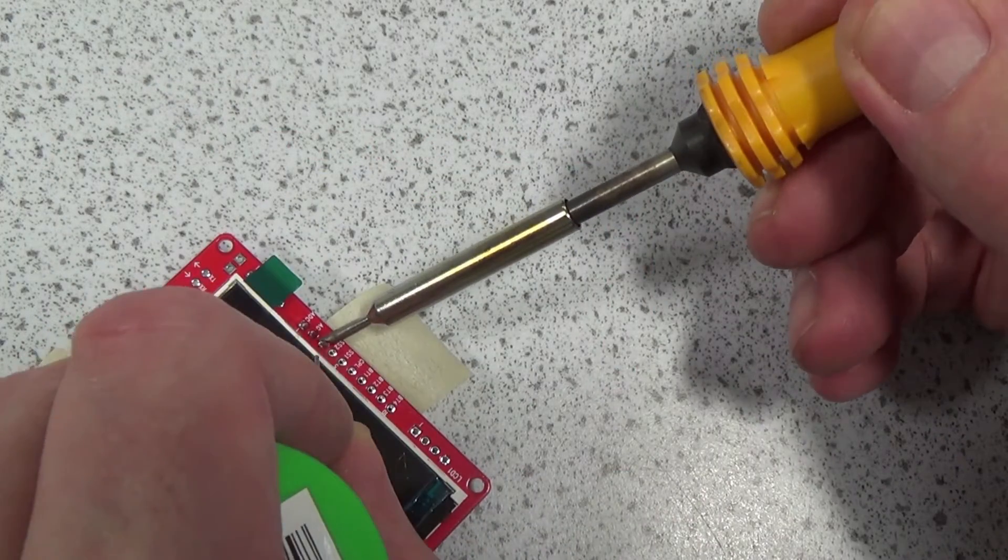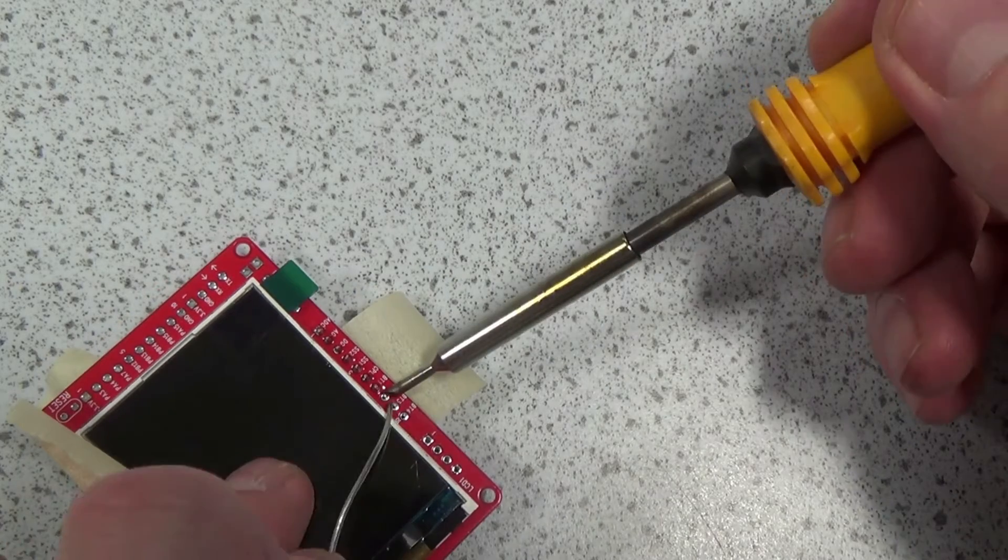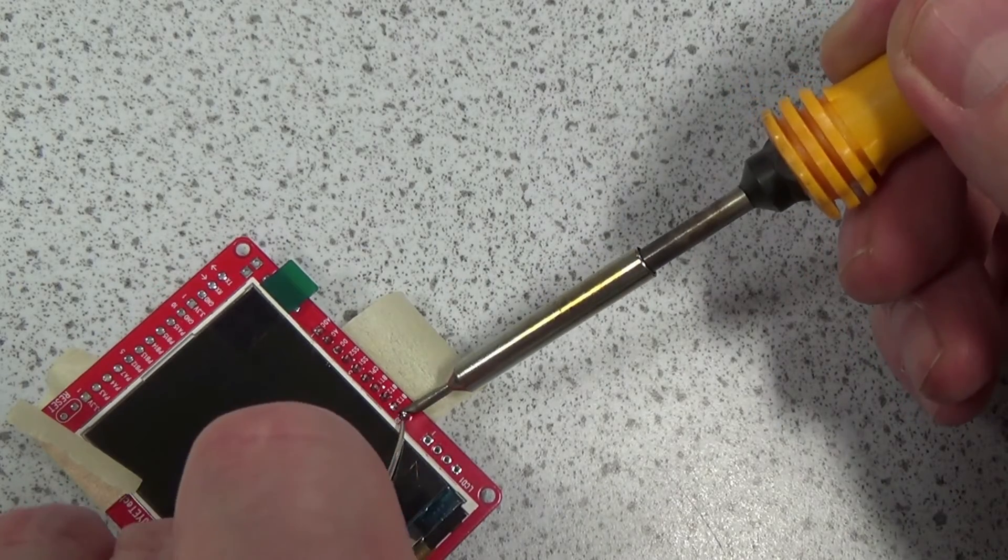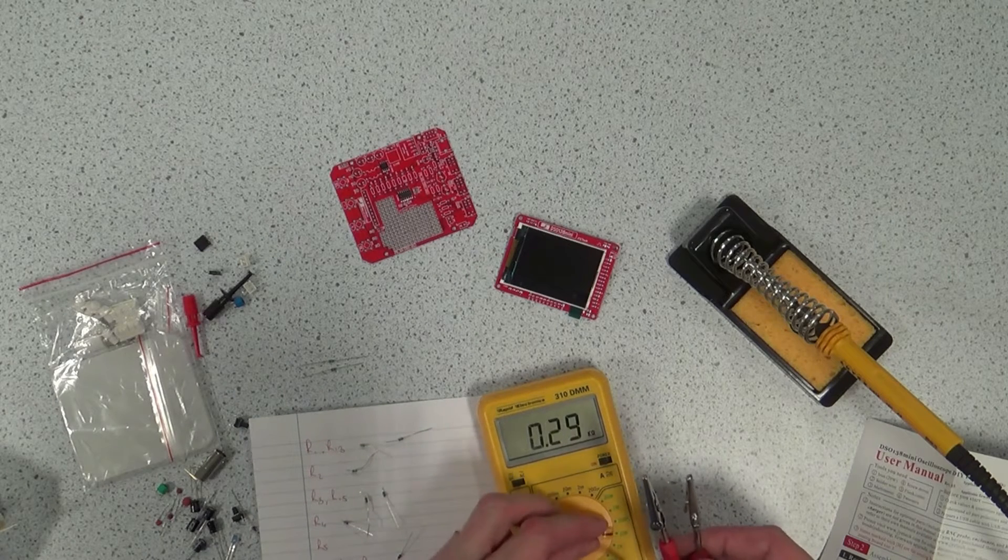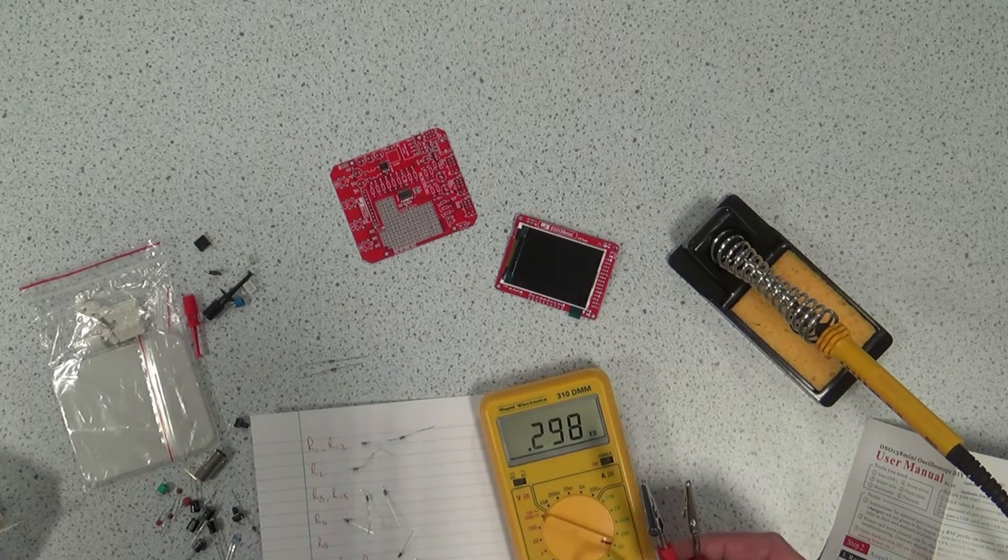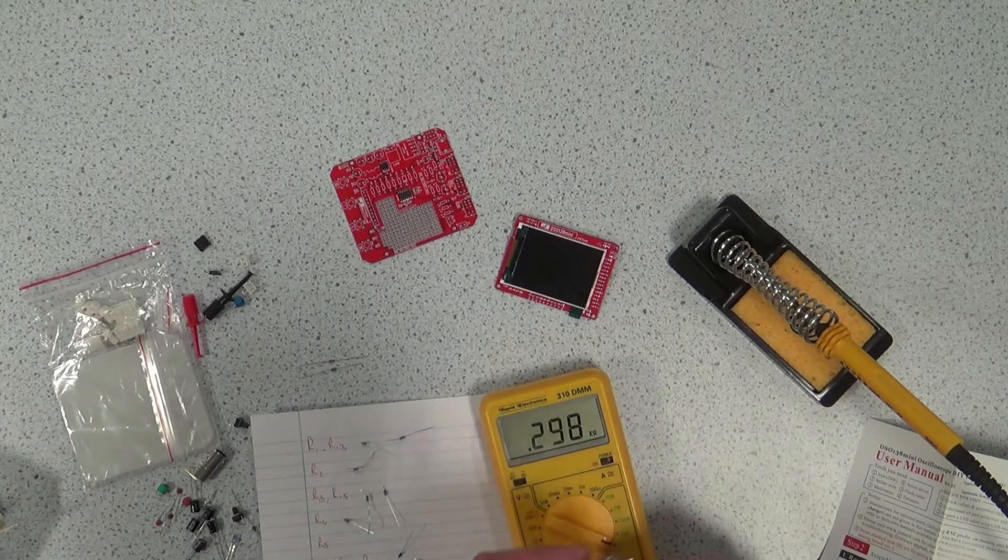Next up, we can turn on the soldering iron and start on the header pins. Now this is the easy bit and you'll find assembling the analogue board a little trickier. What I'm doing here is using a multimeter to measure the resistance of each resistor so that I can identify where it goes on the board, although I could use the coloured bands on the resistors to identify them.